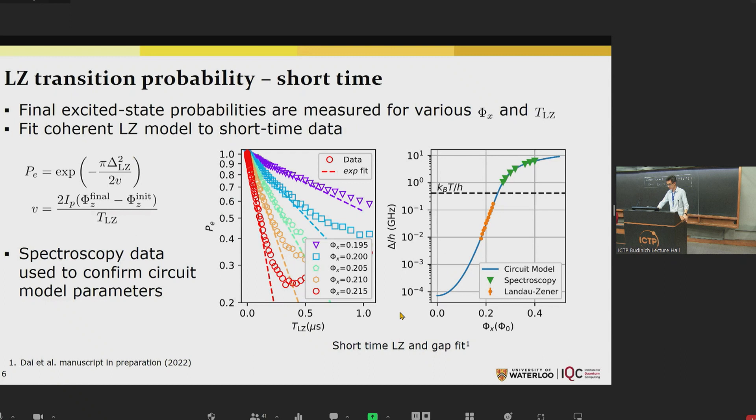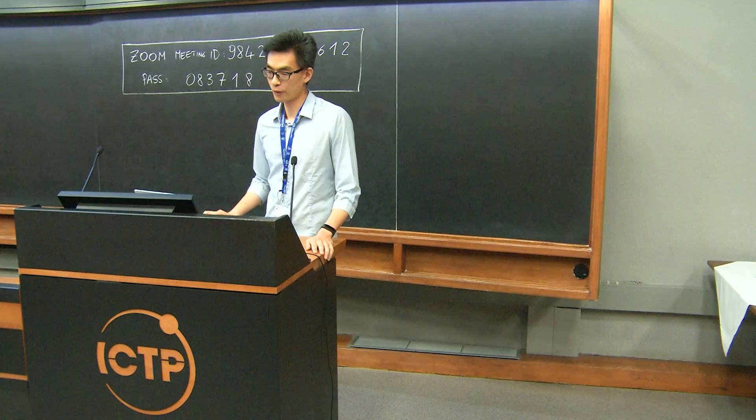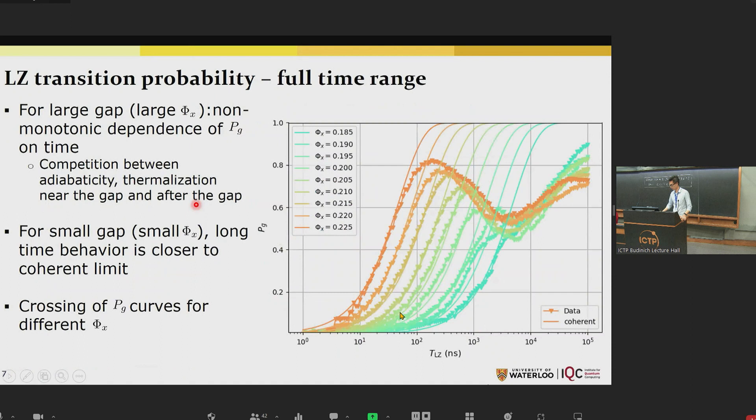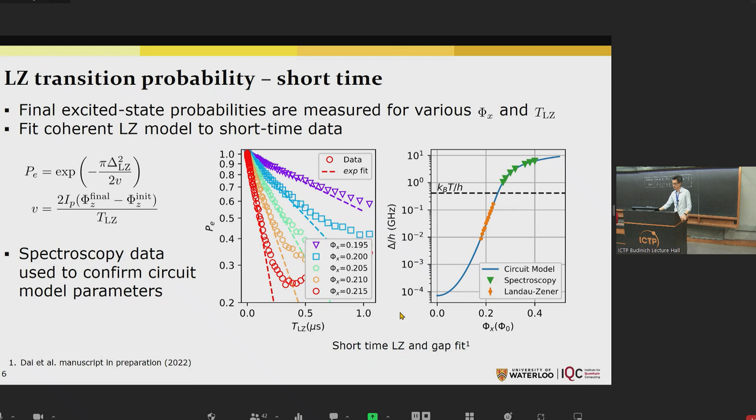First we want to look at the transition probability in the short timescales where we expect the system to be coherent. We show the final excited state probabilities as a function of T_LZ for various phi-x. As expected, you can see that with the increase in T_LZ, P_E decreases exponentially, and that's in line with the prediction of the coherent Landau-Zener formula. So we fit the Landau-Zener formula to the measurement data, and that allows us to extract an effective gap parameter, delta_LZ.